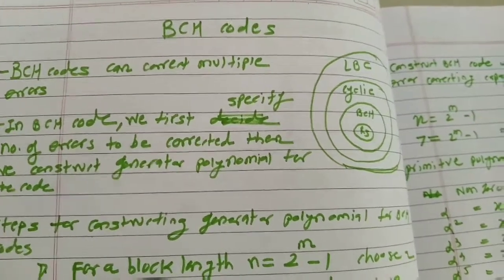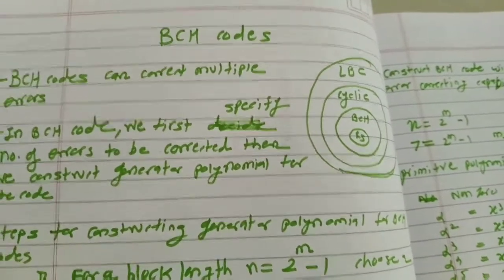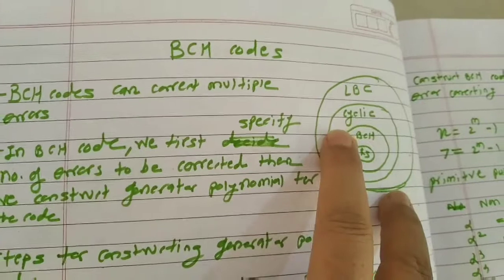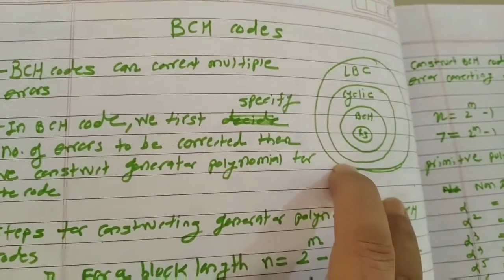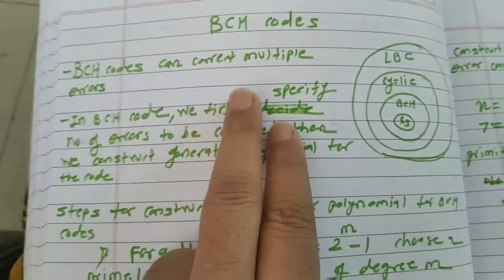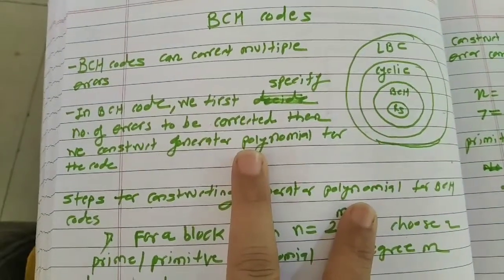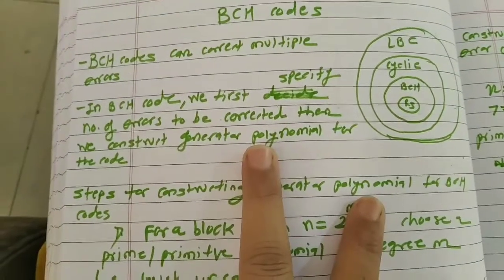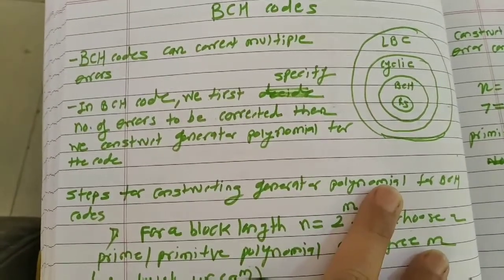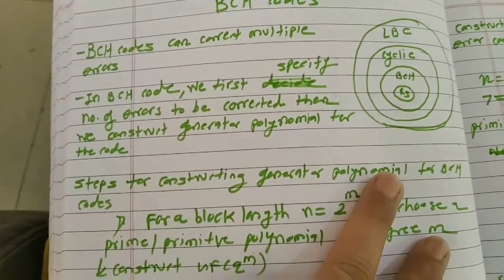Let us study BCH codes. BCH codes are a subclass of cyclic codes. BCH codes can correct multiple errors. In BCH codes, we first specify the number of errors to be corrected and then we generate or construct the generator polynomial for the code.